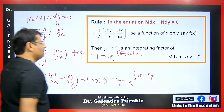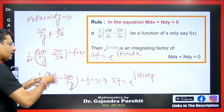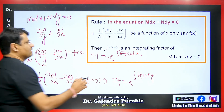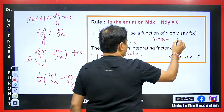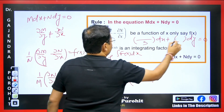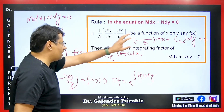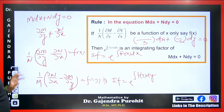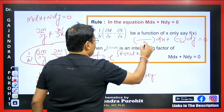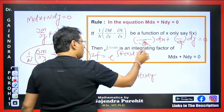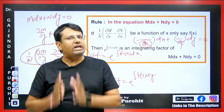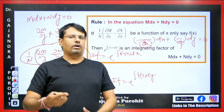A question might come to your mind: when do we apply which formula? Pay attention — when it is in the denominator, the value should be small. Suppose a differential equation has three terms in one part and two terms in another; we want the two-term expression to be in the denominator so it can be easily solved. The denominator being smaller makes it easier to simplify. If there are two terms versus four terms, use the formula with fewer terms in the denominator.